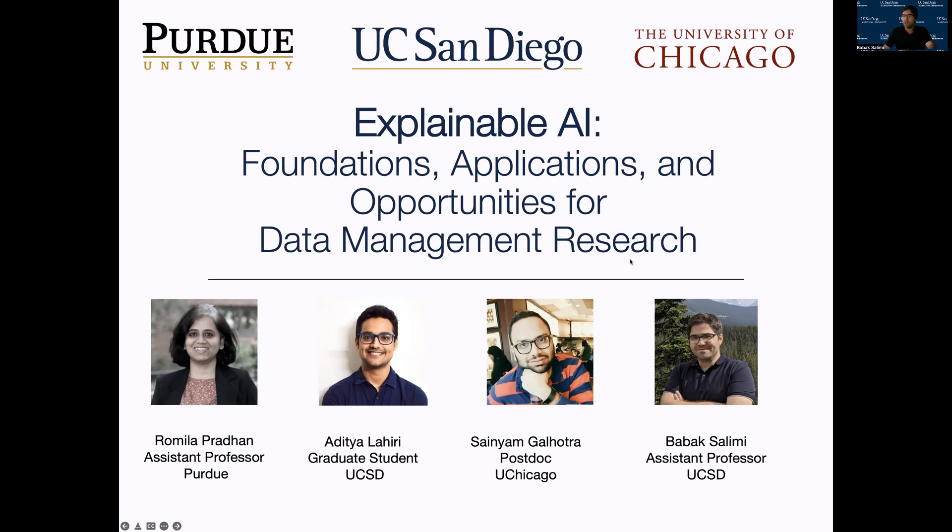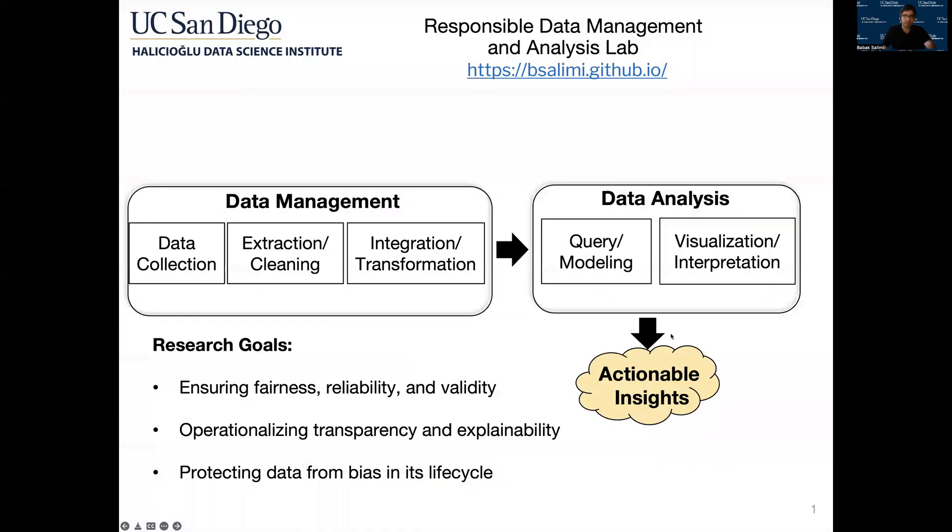But before getting into that, let me spend a little bit of time introducing my lab at UCSD. At UCSD, I'm the director of the Responsible Data Management and Analysis Lab at the Data Science Department. In our lab, we develop principled methods to answer fundamental urgent questions in data science. Namely, how can we make sure that the conclusions we make out of the data science pipeline are fair, unbiased, valid, reliable, and accurate? How can we make sure that the whole process is transparent and explainable so that our conclusions become indisputable? Such challenges are now widely referred to as responsible data science.